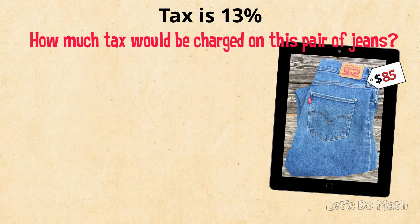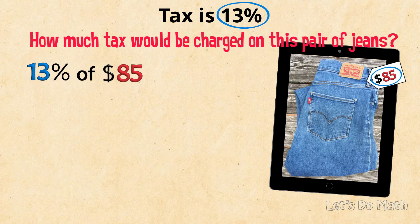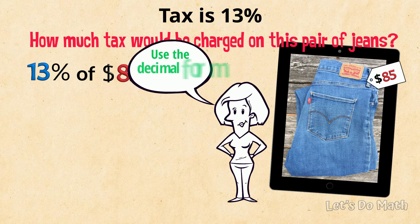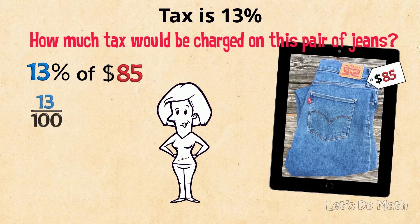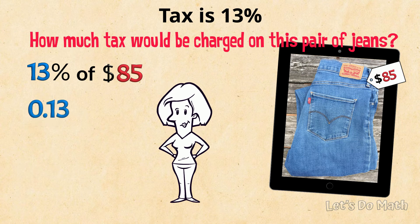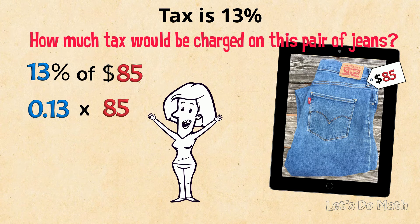We have to find 13% of $85. For this problem, I'm going to use the decimal form of the percentage. 13% is 13 hundredths, and that is 0.13, times 85. There's my plan.